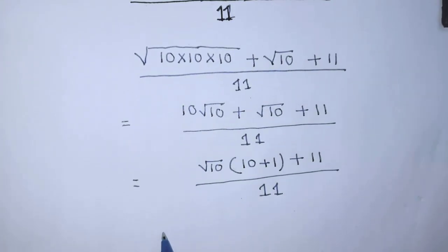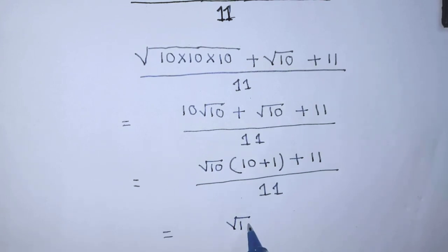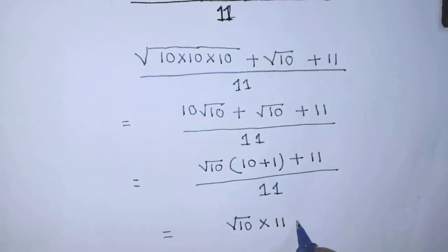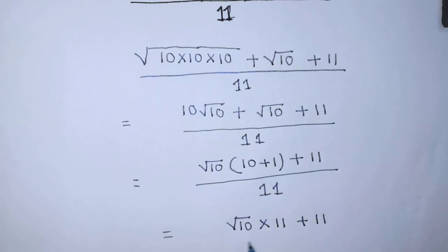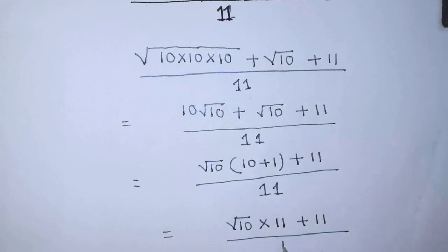So it will be square root of 10 times 11, plus 11, over 11.